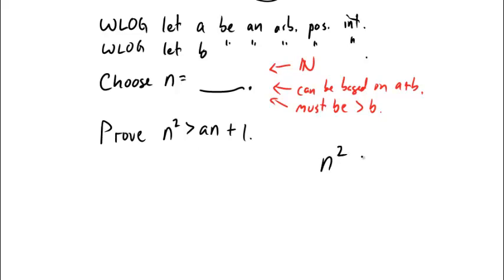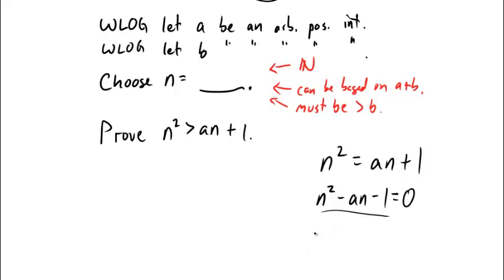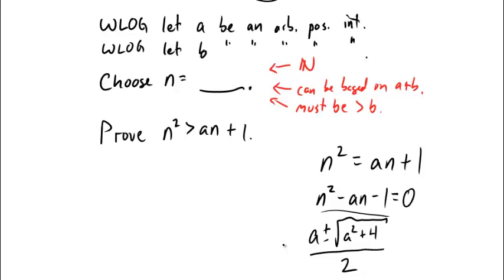This is scratch work, so I can do anything I want. Let's check where they're equal: n squared minus a·n minus 1 equals 0. Using the quadratic formula — negative b plus or minus the square root of b squared minus 4ac over 2a — we get n equals a plus or minus the square root of a squared plus 4, all over 2.